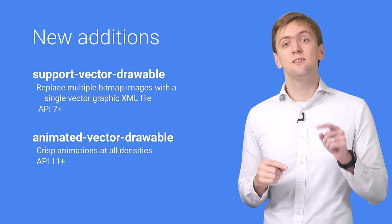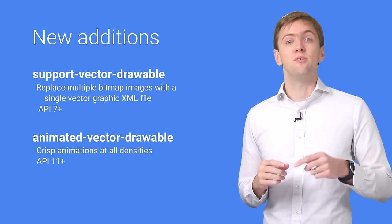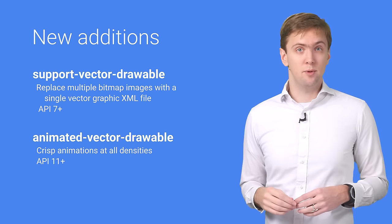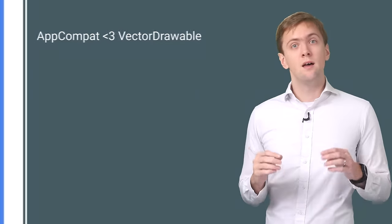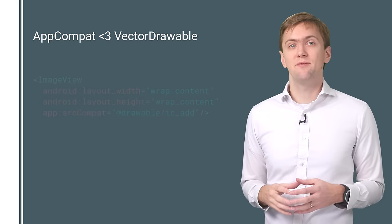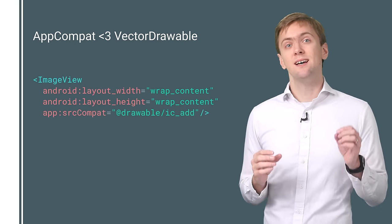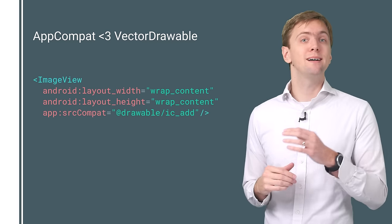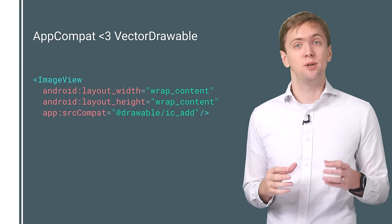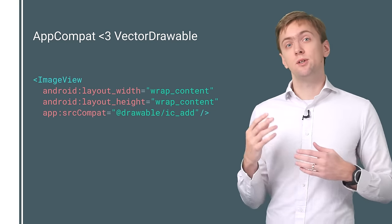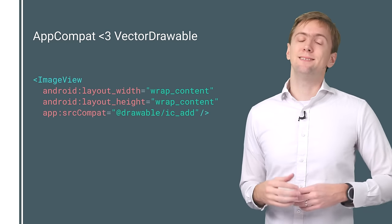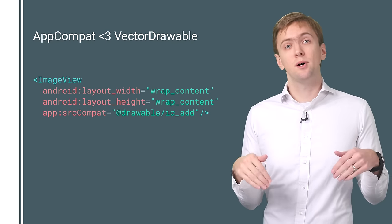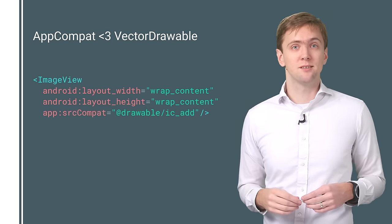Expect smaller APKs as you replace multiple PNG assets with a single Vector Drawable. AppCompat is already taking advantage of Vector Drawables in this release to save everyone some space, and it provides a handy SrcCompat attribute for image views and image buttons, making it easy to use your new Vector Drawables. Check out our blog post for all the details on how this works.